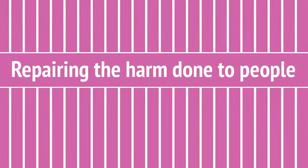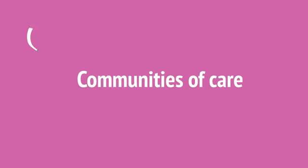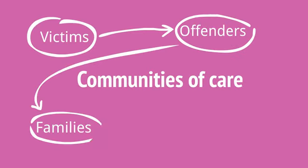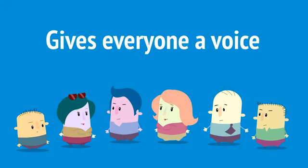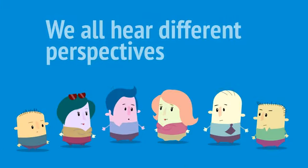Where did it come from? Restorative practice came from restorative justice — a new way of looking at justice that focuses on repairing the harm done to people and relationships rather than on punishing offenders. Although taking responsibility is important, it expanded to include communities of care as well, with victims and offenders' families and friends participating in collaborative processes called conferences and circles.